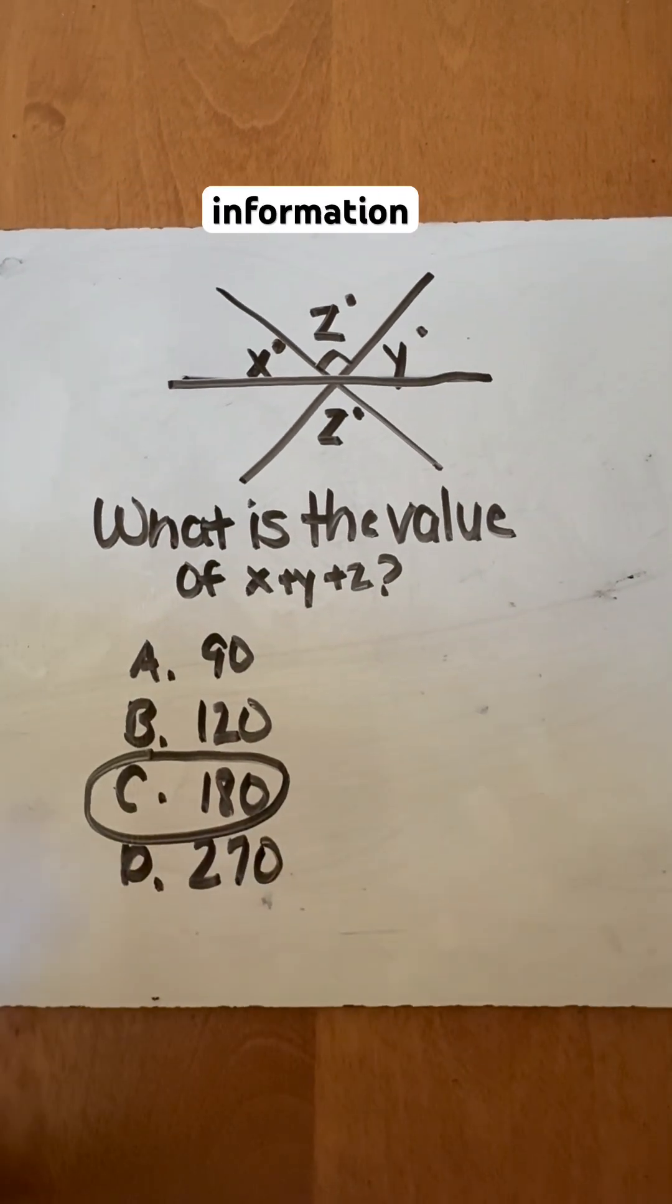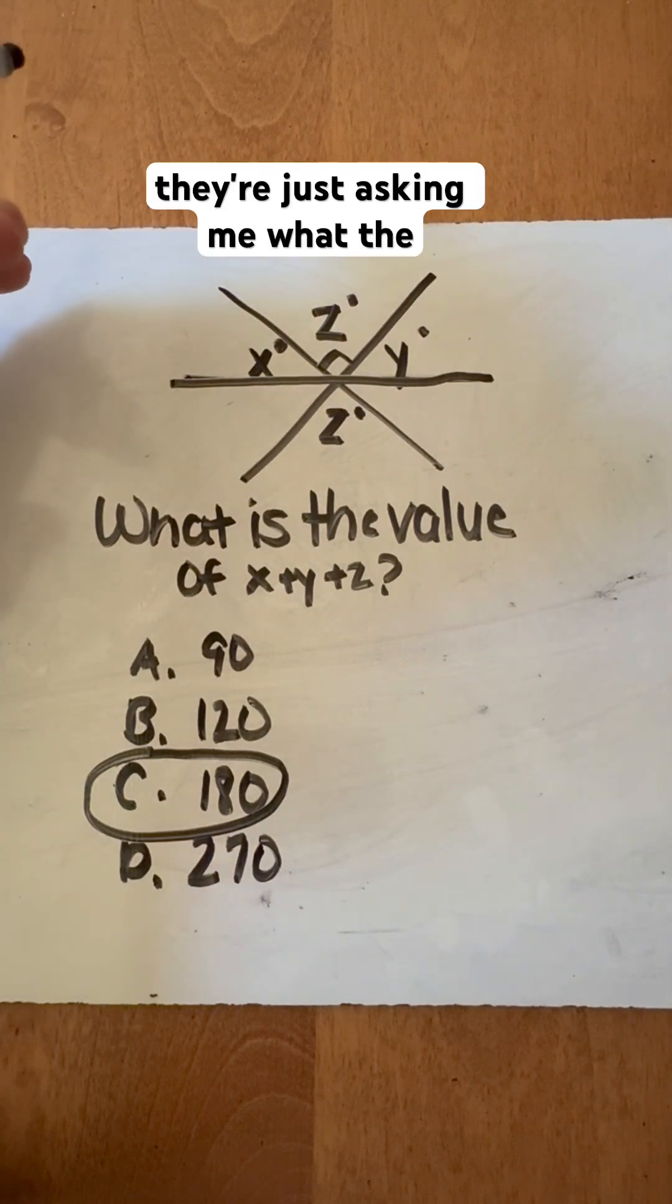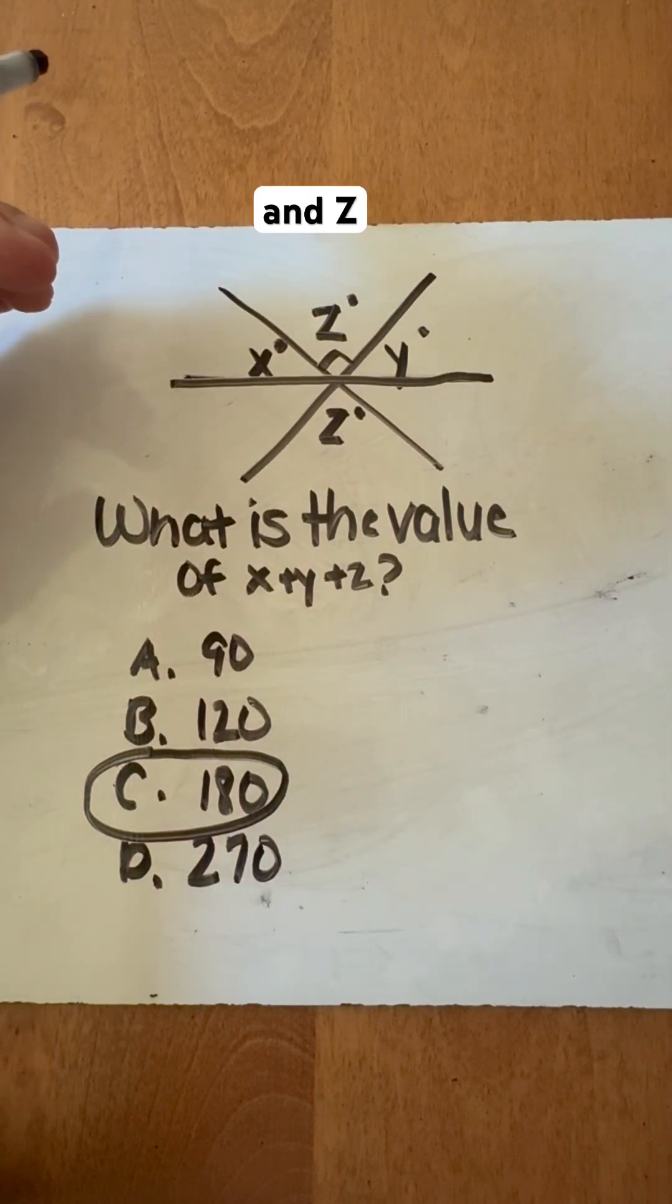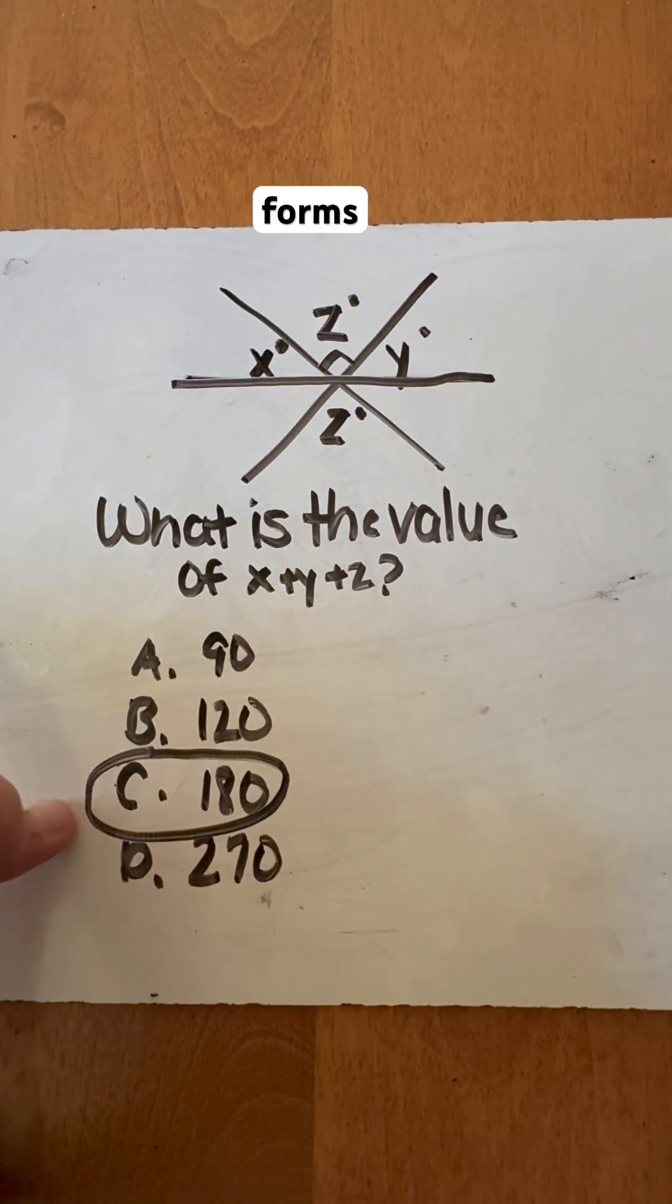I don't know enough information other than this being 90 degrees, but that's not what they're asking. They're asking what the total value is for x, y, and z. When adding all those together, it's on a straight line, which forms a 180 degree angle or straight angle.